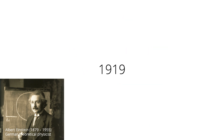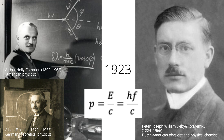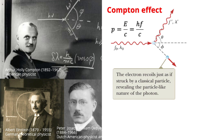In 1919, Einstein concluded that a photon of energy E travels in a single direction, and carries a momentum equal to E over C, or H F over C. In 1923, Arthur Holly Compton and Peter Debye independently carried Einstein's idea of photon momentum further. They explained their experiments by treating photons, not as waves, but as point-like particles having energy H F and momentum H F over C, and by assuming that the energy and momentum of the isolated system of the colliding photon-electron pair are conserved.